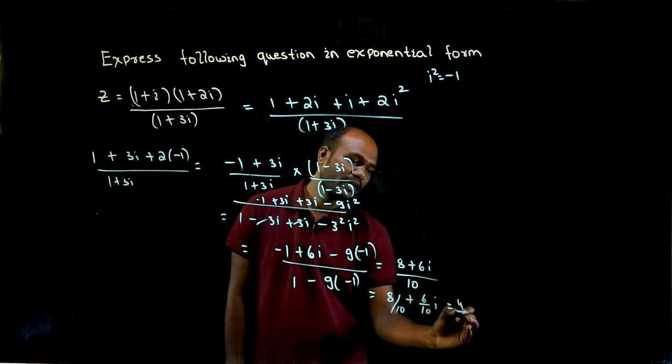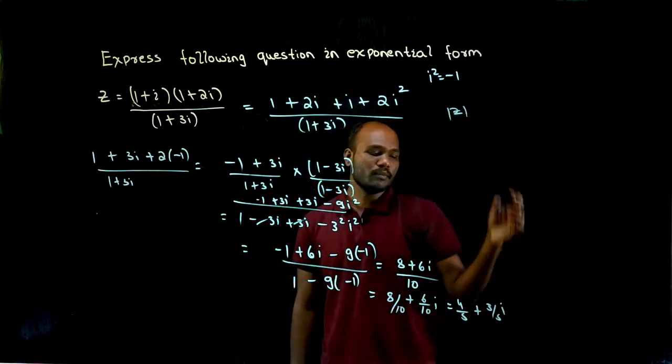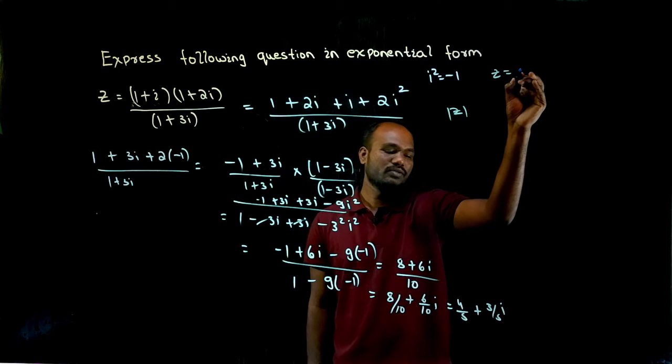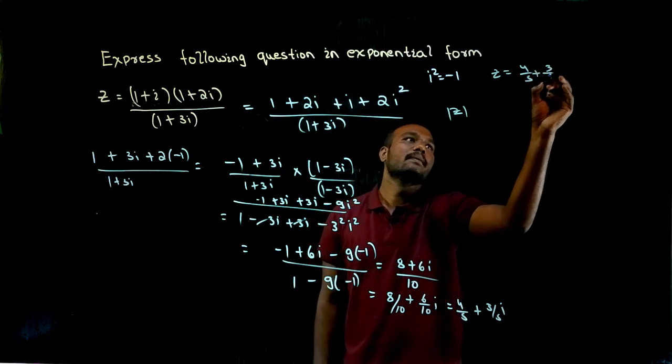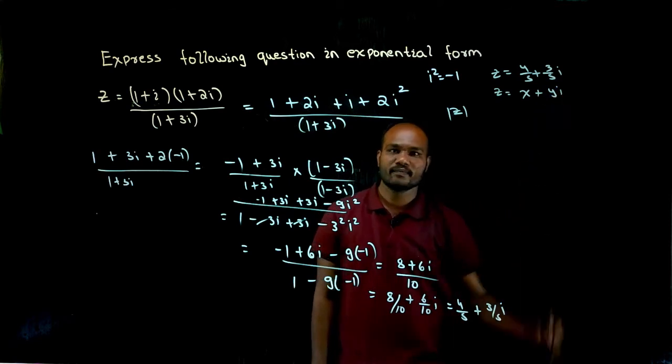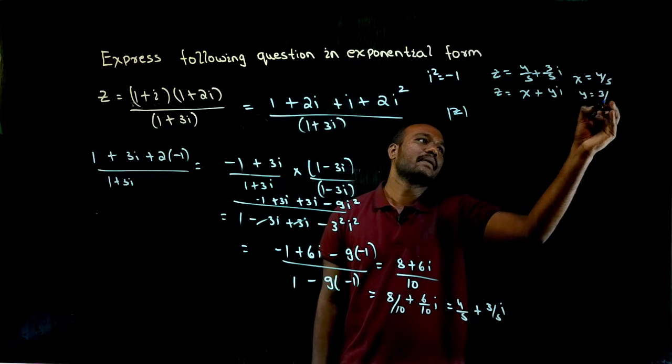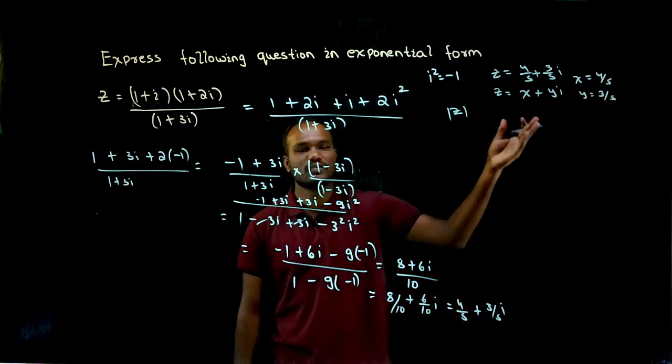So if I just split this I'll get 8 by 10 plus 6 by 10i. If I solve this I'll get 4 by 5 plus 3 by 5i. So we have to find mod z. To find mod z, the given z value is what? 4 by 5 plus 3 by 5i. So we should compare this with what? x plus yi. So what is the value of x? x value is 4 by 5. What is the value of y? 3 by 5. So x value is known, y value is known.